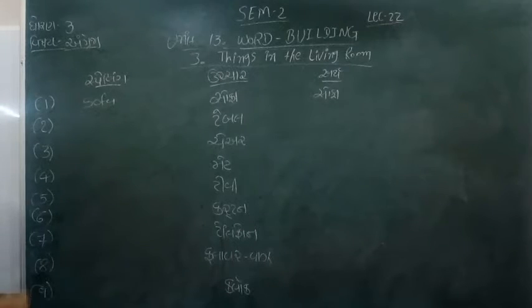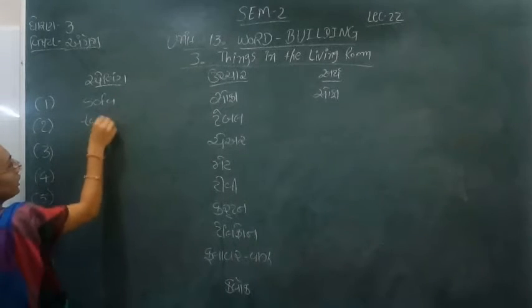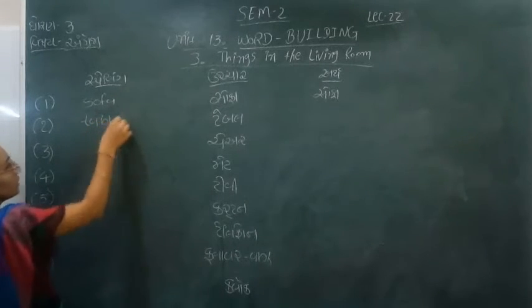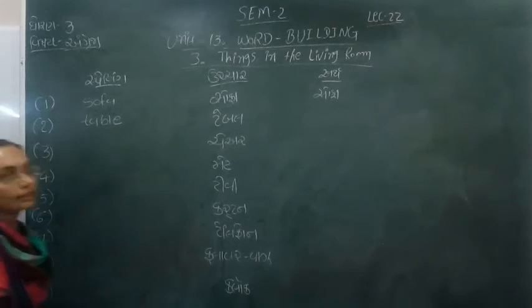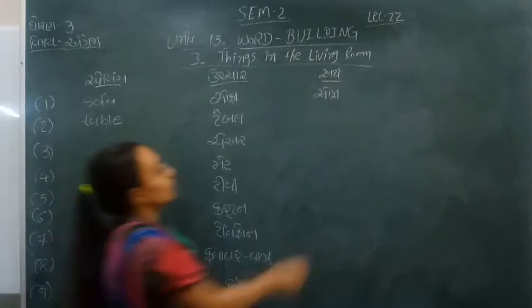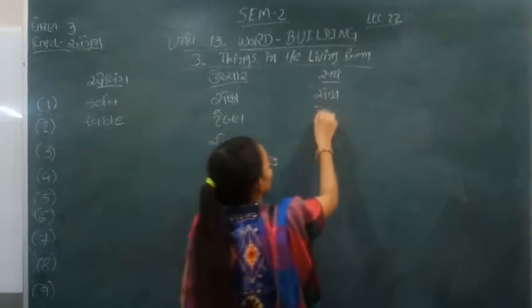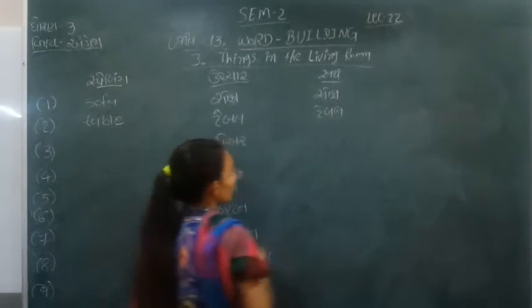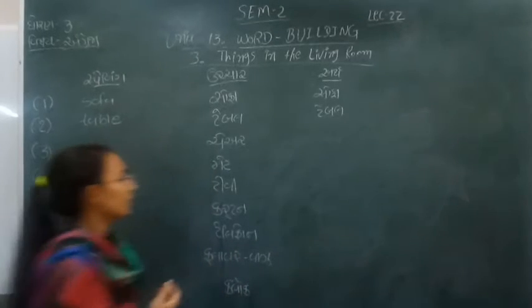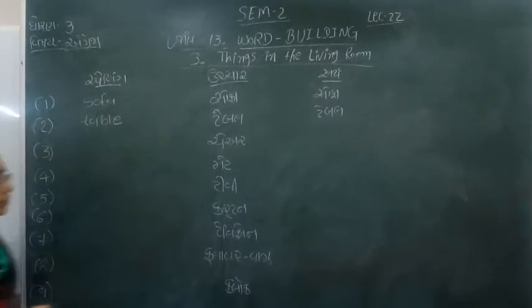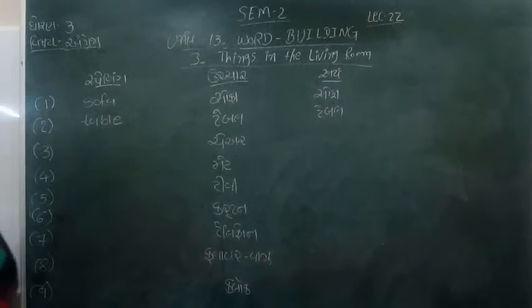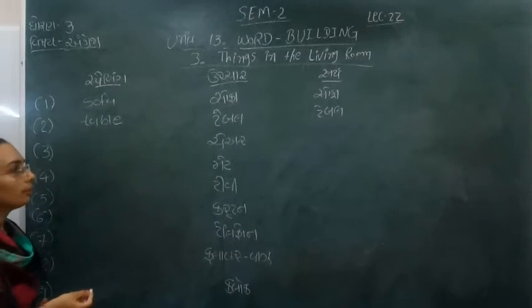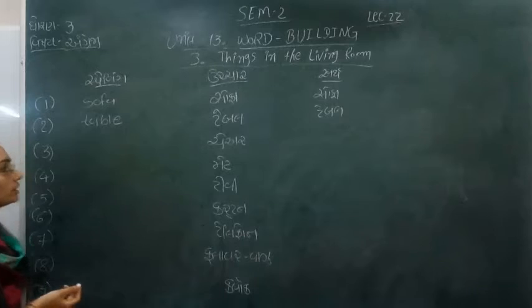What is table? T, A, B, L, E — table, like stable. What is that? T, A, B, L, E. What is that?